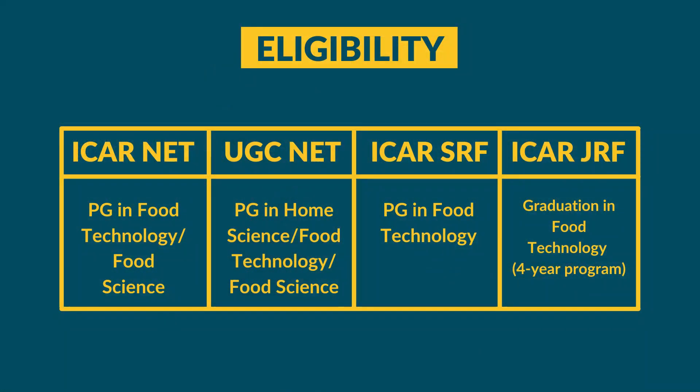For ICER-JRF, the basic requirement is a graduation — a BSc in food technology. A four-year BSc Honours or B.Tech program makes you eligible to apply. If you're unsure whether your college is ICER-accredited, check the link in the description or Google 'ICER-accredited college 2021-2022.' The list is updated every year, so always verify through official websites.